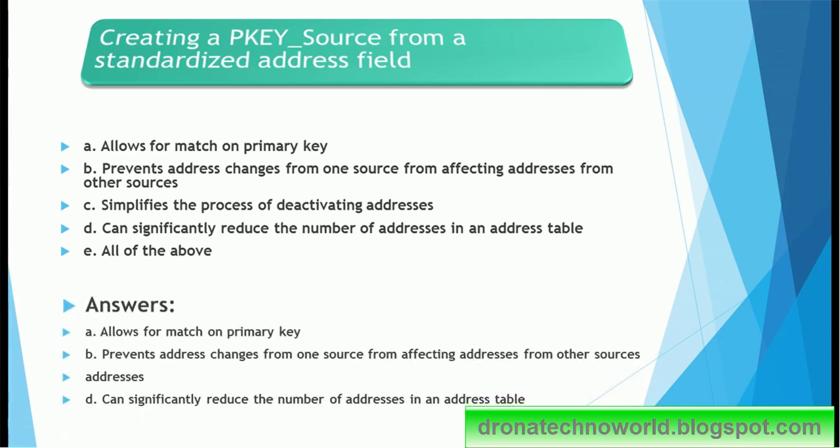And I think the correct answer is it allows the match on primary key, prevents the address changes from one source from affecting the addresses from other source, and can significantly reduce the number of changes in the address. Option C, that it simplifies the process of deactivating address, has nothing to do with this PK source object. It's totally about how you implement the deactivation.